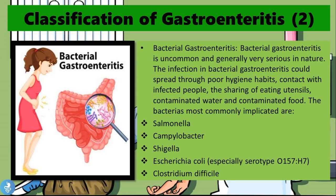Bacterial gastroenteritis is uncommon and generally very serious in nature. The infection could spread through poor hygiene habits, contact with infected people, the sharing of eating utensils, contaminated water, and contaminated food. The bacteria most commonly implicated are Salmonella, Campylobacter, Shigella, Escherichia coli — especially subtype O157:H7 — and Clostridium difficile.